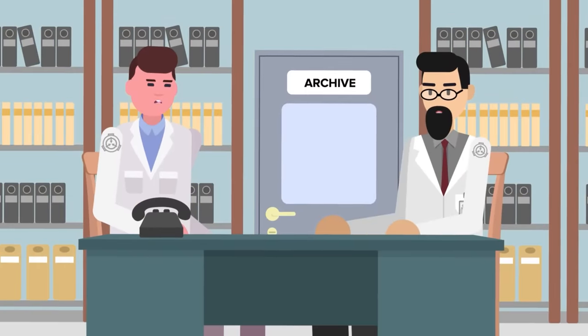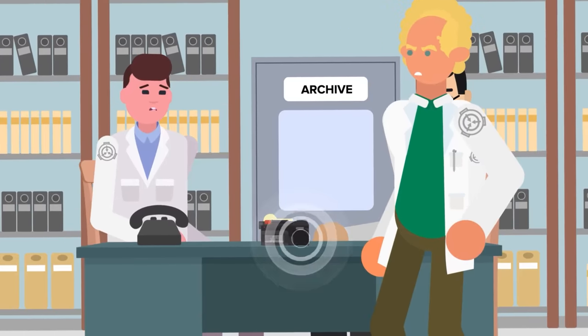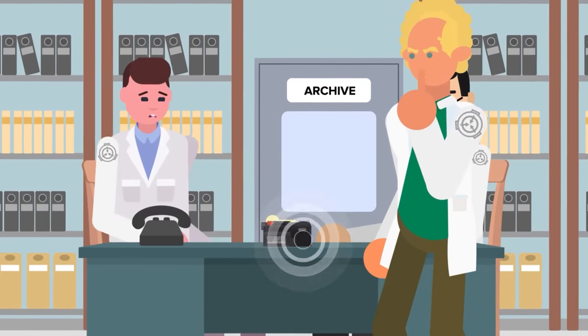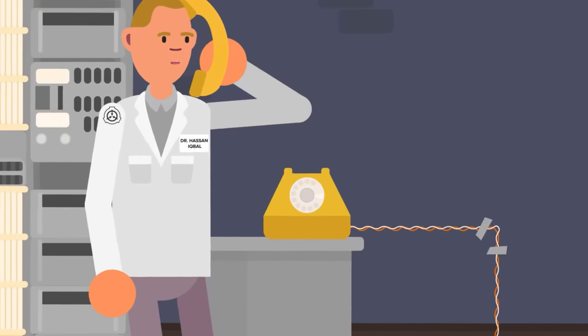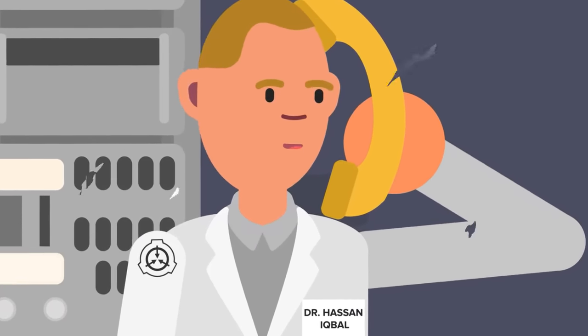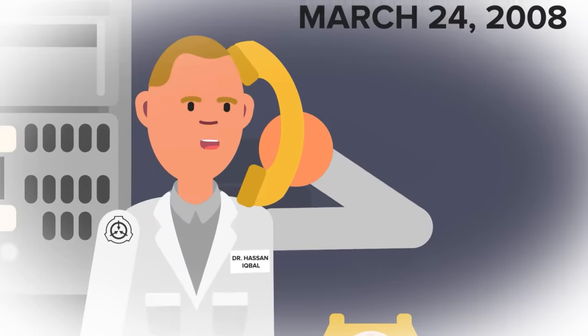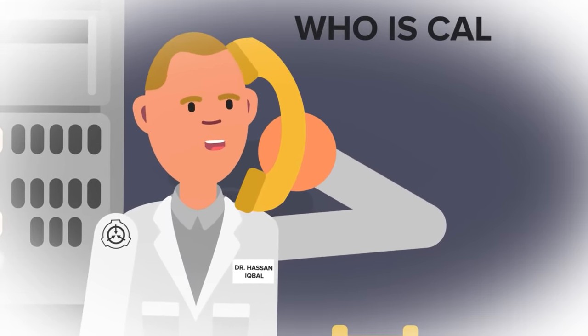Two phone conversations with the voice via SCP-1193-02 have been transcribed in the addendum to 1193's main file. Both are conversations between the voice and Dr. Hassan Iqbal, Director of Research at the local SCP containment site. In the first of two conversations, recorded on March 24, 2008, Dr. Iqbal asked who was calling, and the voice identified itself as David.